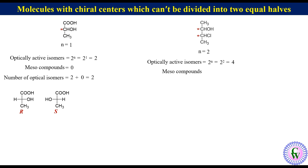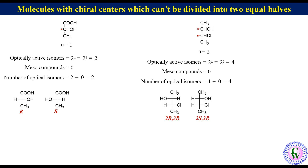The number of meso compounds is equal to 0. Thus, the total number of optical isomers will be equal to 4 plus 0, which equals 4. These isomers are 2R-3R, 2S-3R, 2R-3S, and 2S-3S.